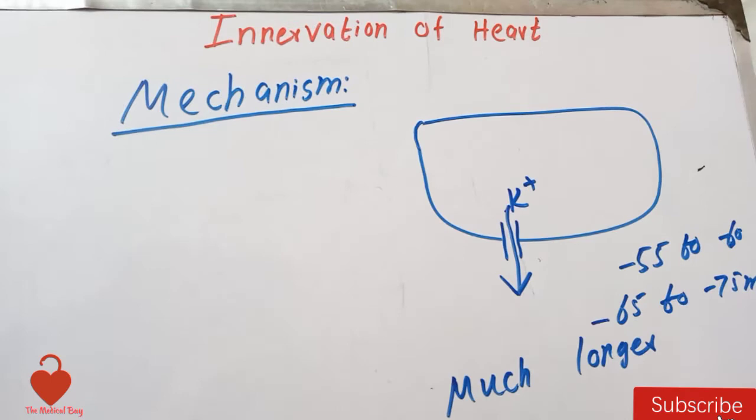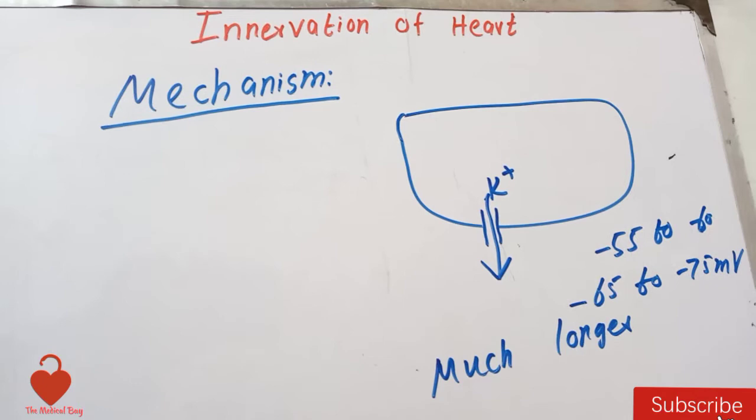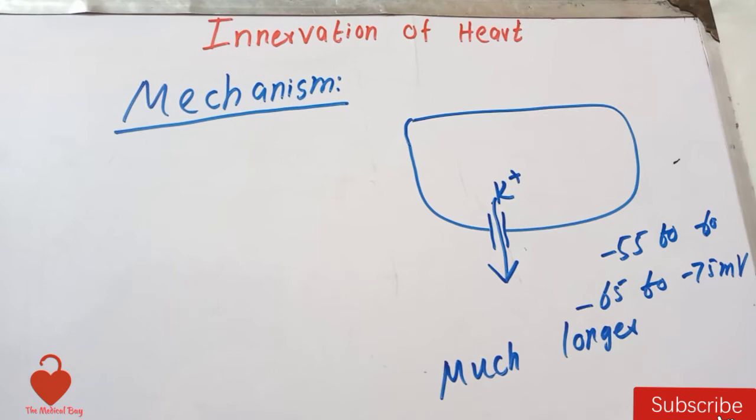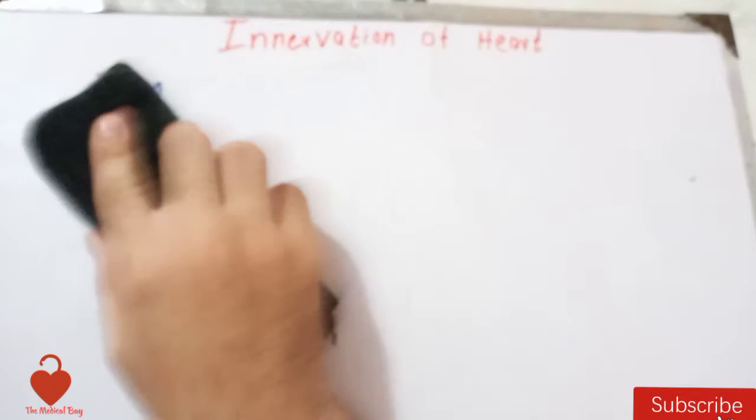In the same way, at the atrial junctional fibers, the hyperpolarized membrane delays the transmission of impulses from the atria into the AV node and through to the ventricle. The term used for this state is hyperpolarized. Now let's talk about the effects of the sympathetics on the heart.